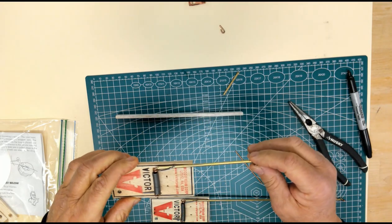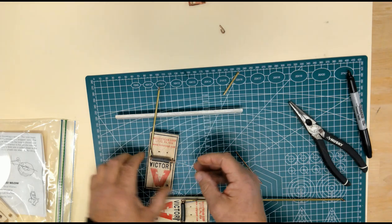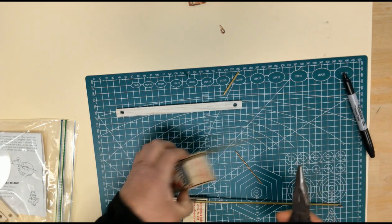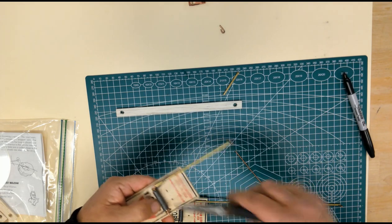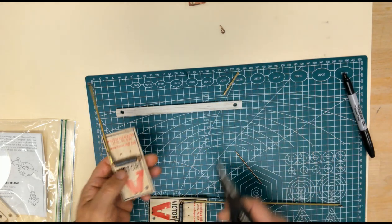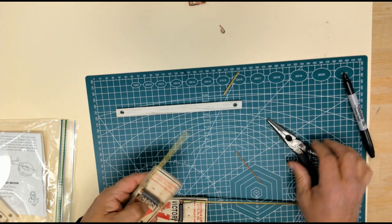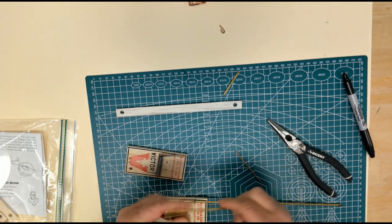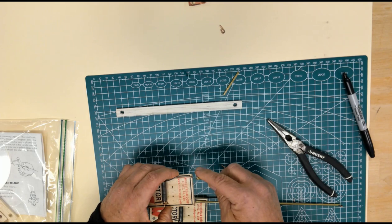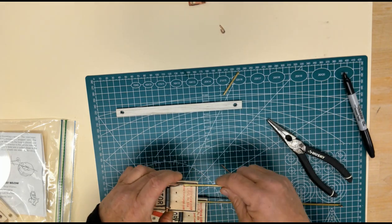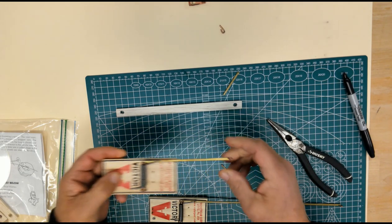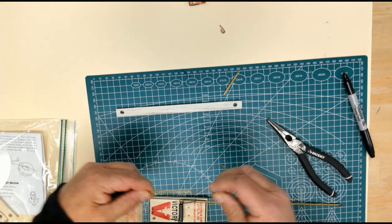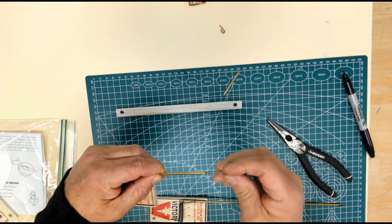So there you go. You have your modified mousetrap. And just to review the steps really quickly, we took off the little bait holder, discarded it. We took off the trigger, and discarded only the staple that was holding it down. And we saved the trigger because it goes into the end of our lever arm. It's where we attach the string.